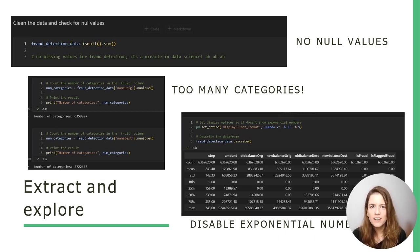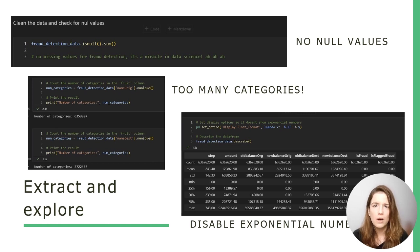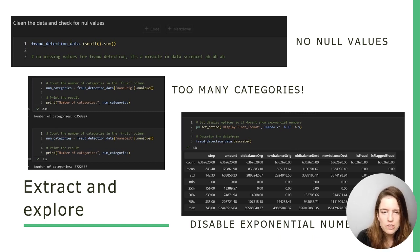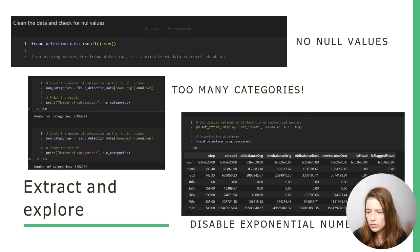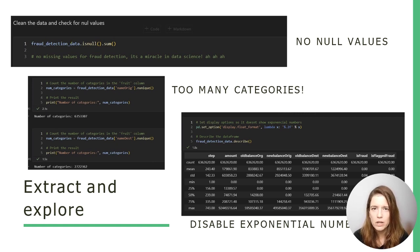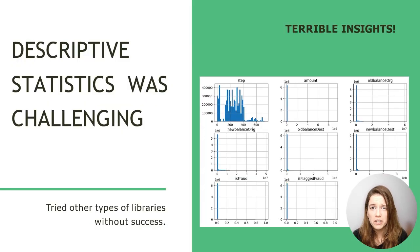I was trying to find ways to separate categories to look into the dataset, but the dataset didn't really have variables that I would consider good for predicting fraud. There were just too many categories — for example, on the name origin and name destination. Another problem I had was dealing with exponential numbers — for some reason my dataset was displaying everything in exponential format. I was getting very frustrated and tried different libraries such as matplotlib and many others, but I was not effective at that. You can see the terrible insights because of that.